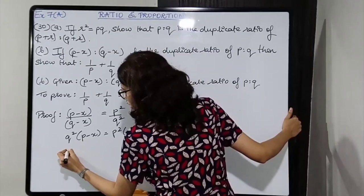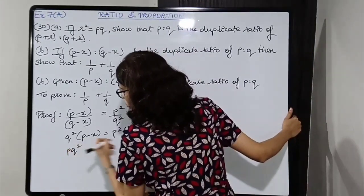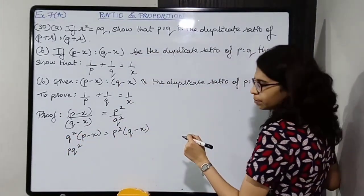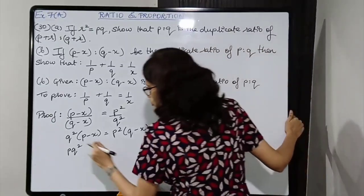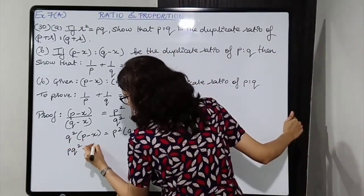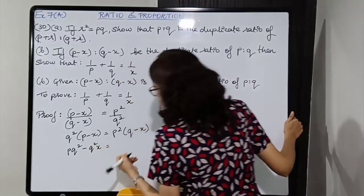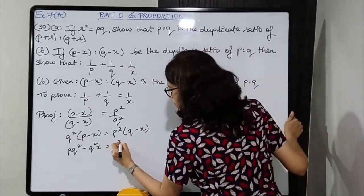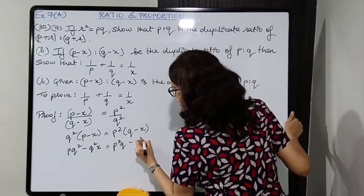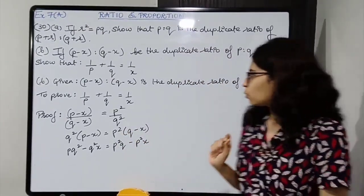So 1 upon P plus 1 upon Q is equal to 1 upon X. Hence proved. Box this and write down the final statement.